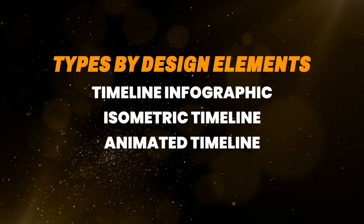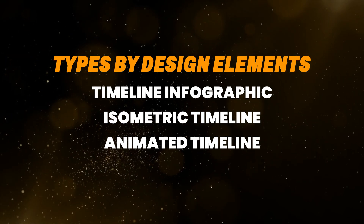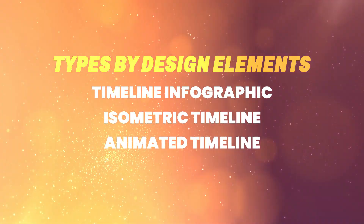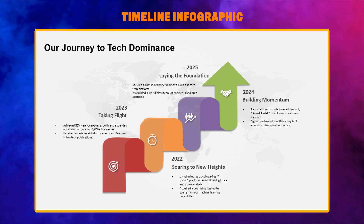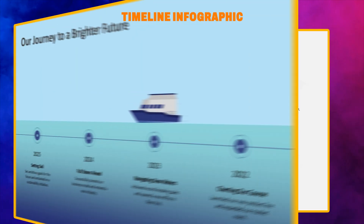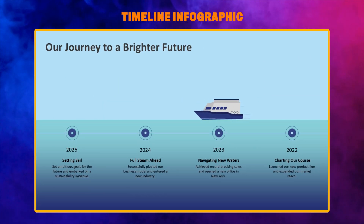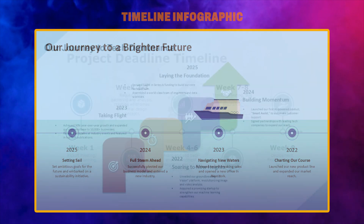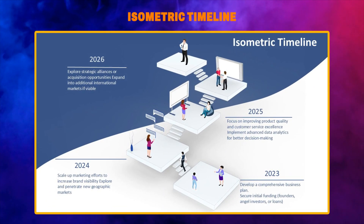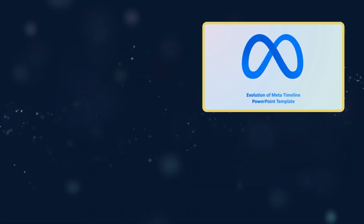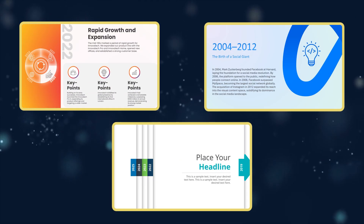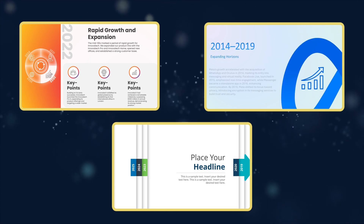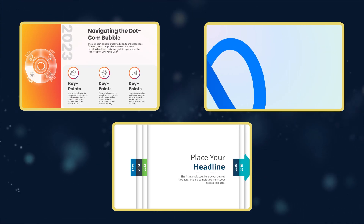Now let's jazz things up with design. Ever seen timelines that resemble infographics? Those are timeline infographics, using images and charts to enhance visual interest. Feeling creative? There are also isometric timelines with a 3D perspective for a unique touch. Of course, animation always adds a wow factor — check out animated timelines that bring your events to life with smooth transitions and eye-catching visuals.